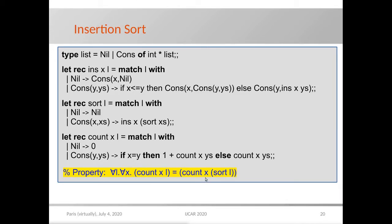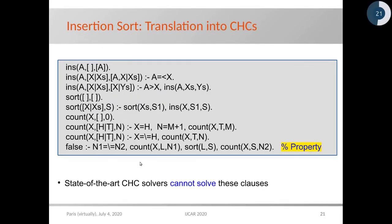Following our approach, we translate this property into constraint horn clauses, which however cannot be solved by state-of-the-art solvers, because similarly to the asum/listmax example, no model is expressible in the constraint theory.